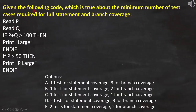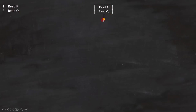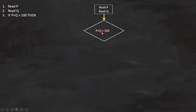Here the question is: given the following code, which is true about the minimum number of test cases required for full statement and branch coverage? We need to find out how many test cases are required to cover statement coverage and branch coverage. Let's analyze the code and draw the flowchart. Lines 1 and 2 — read p and read q — are statements, and we represent them like this. Line number 3 is: if p plus q is greater than 100. It is a condition and we represent it like this. Since it is a condition, we will have a minimum of two outcomes — one for true and one for false. Line number 4, print large, is a statement.